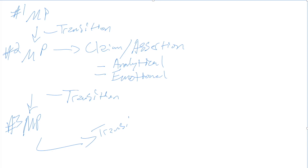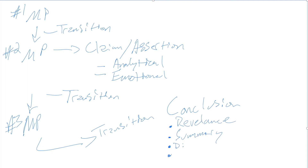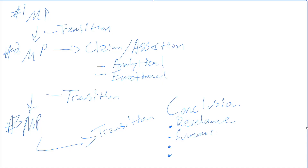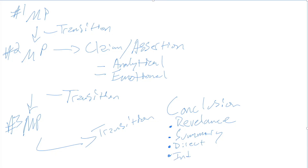Once we have our points and our evidence, we will again transition to the conclusion. In the conclusion, we are going to establish several important key takeaways for the audience. We will again establish the relevance to the audience's lives. We can provide them an easy-to-understand and easy-to-remember summary of what was said, and include a direct or indirect close, or call to action. The biggest difference between a persuasive speech and an informative speech is that a persuasive speech absolutely requires a call to action. Tell the audience what you want them to do.